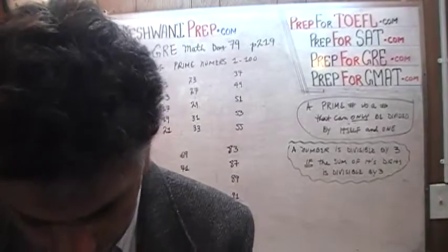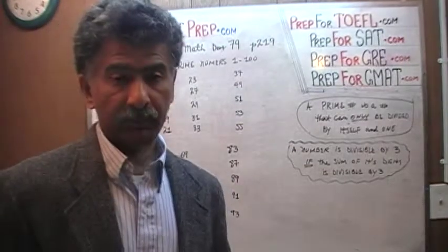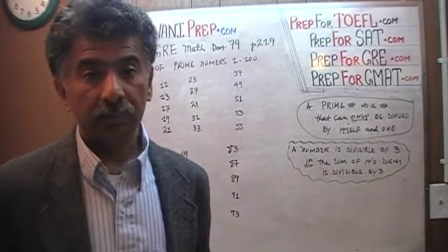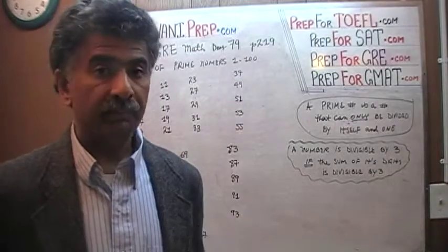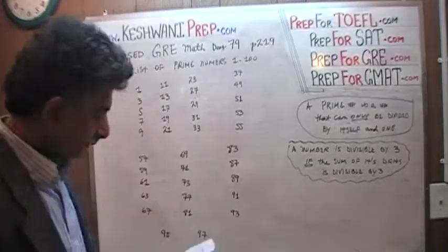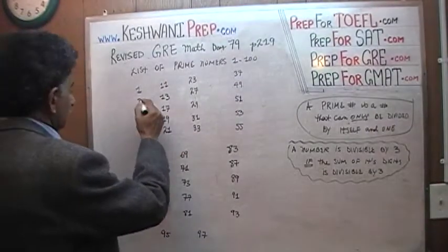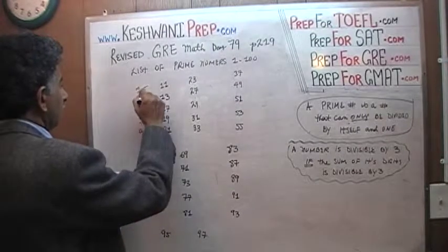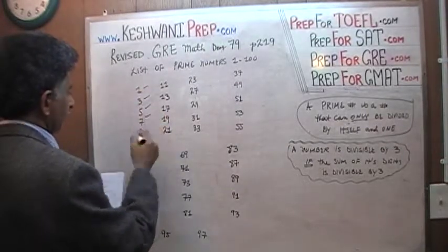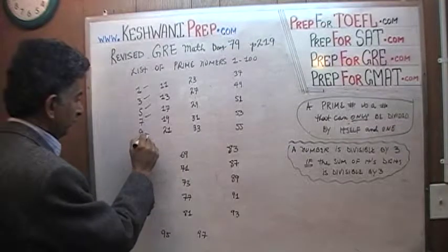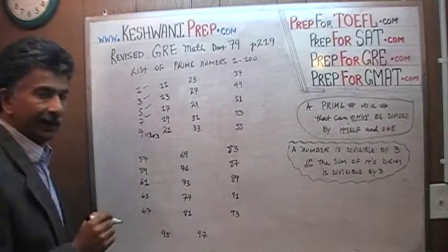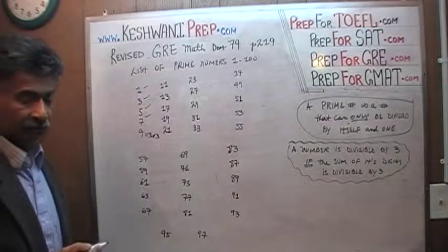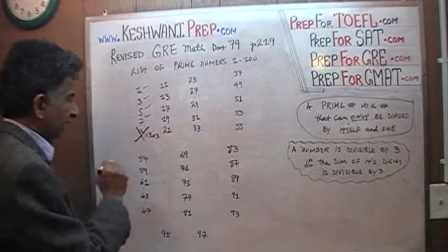For a number to be a prime number, first of all it has to be an odd number, because if it were an even number you can divide it by 2 and it will no longer be a prime number. So let's go through here. We have 1, 3, 5, 7 — those are fine. 9 can be divided by 3. 9 equals 3 times 3, which means 9 is not a prime number.